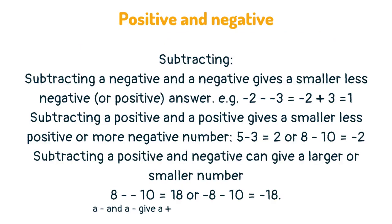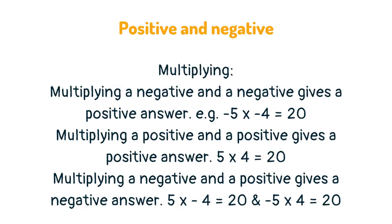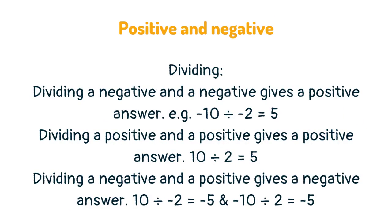Subtracting a negative and a negative gives a smaller, less negative or positive answer. Subtracting a positive and a positive gives a smaller, less positive or more negative number. Subtracting a positive and a negative can give a larger or smaller number. Multiplying a negative and a negative gives a positive answer. Multiplying a positive and a positive gives a positive answer. Multiplying a negative and a positive gives a negative answer. Dividing a negative and a negative gives a positive answer. Dividing a positive and a positive gives a positive answer. Dividing a negative and a positive gives a negative answer.